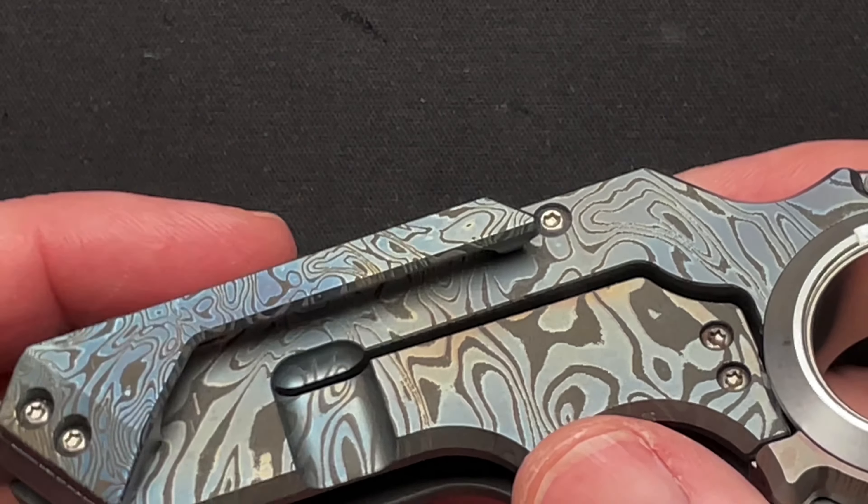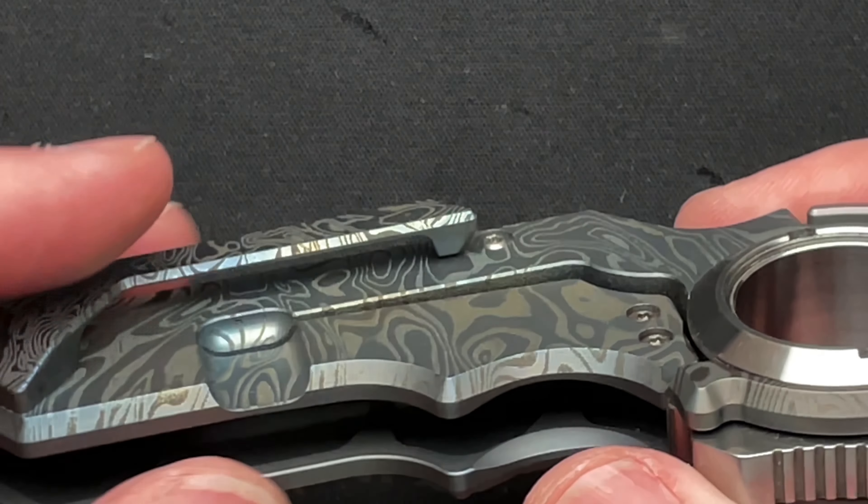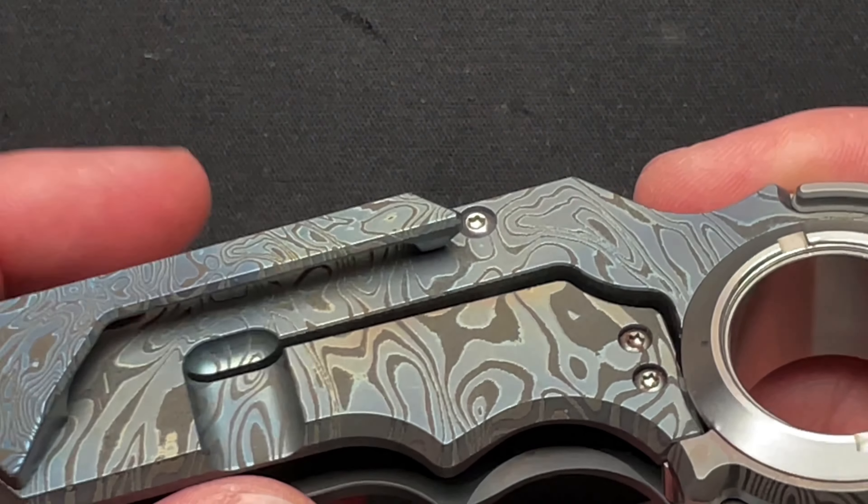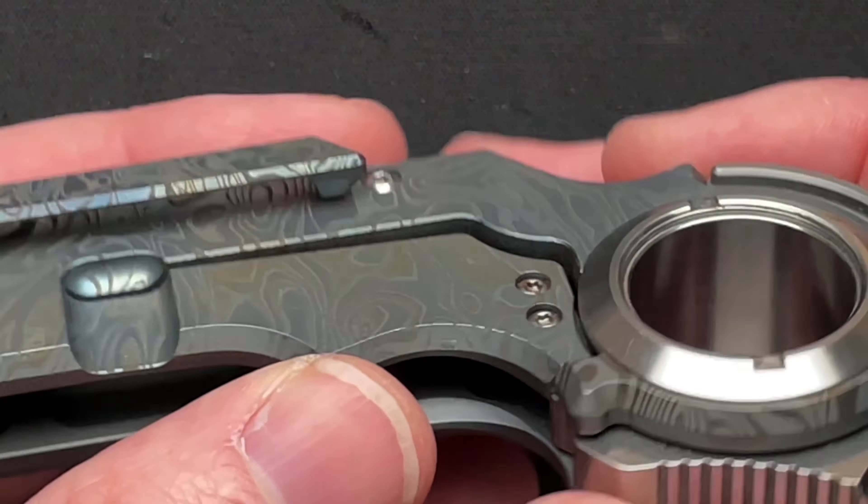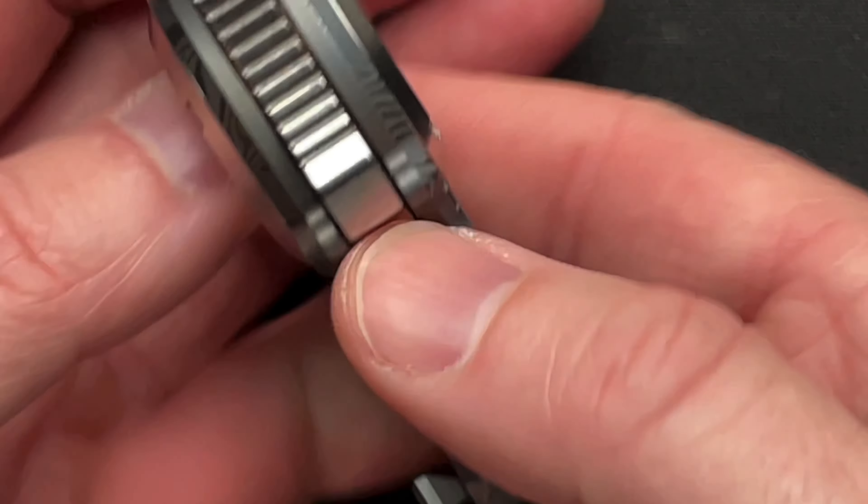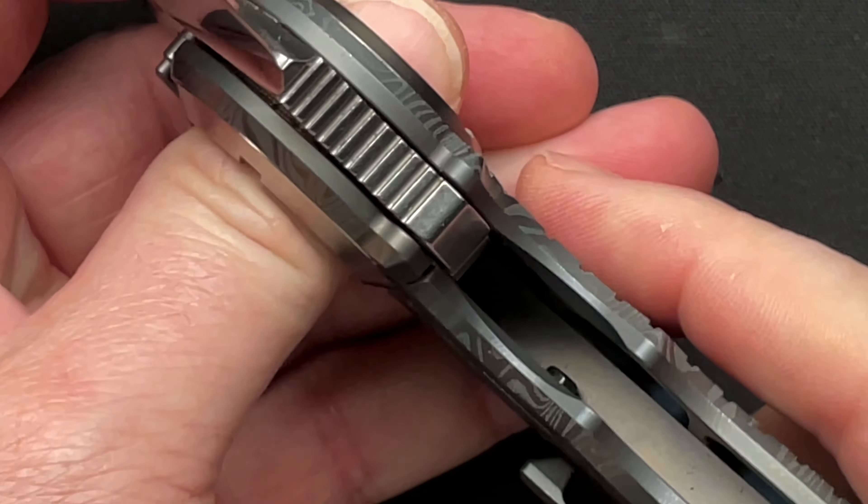Again, titanium pocket clip with just a milling, like a laser etched type pattern. Steel lock bar insert that does act as an over-travel stop.